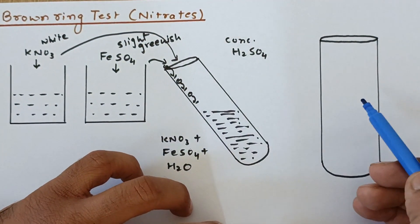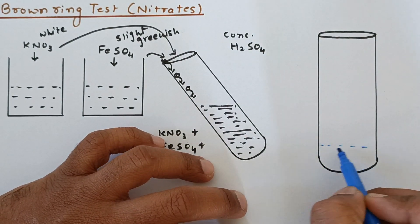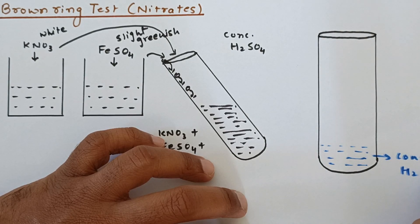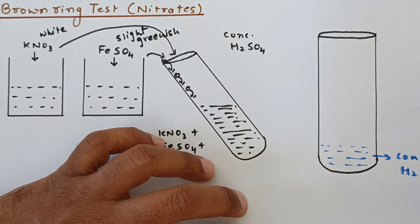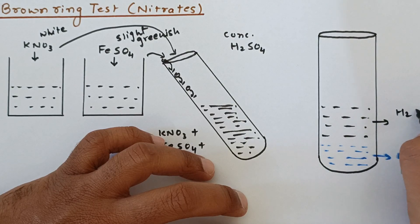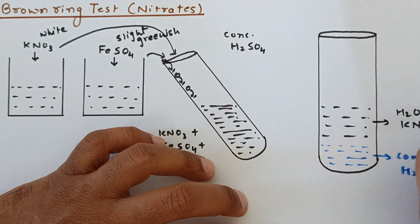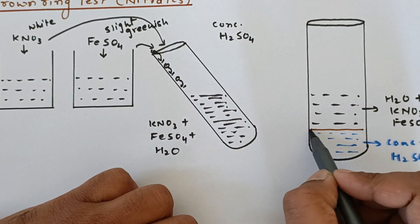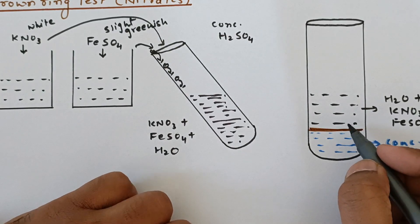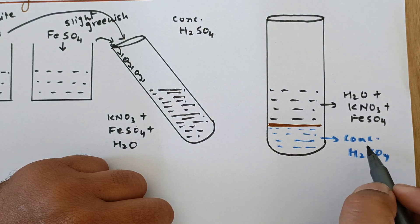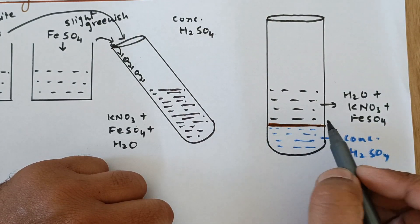So let me show you in a newer picture over here that this is the concentrated sulfuric acid, and above it we have water plus KNO3 plus FeSO4. Now where does this reaction take place? The reaction takes place at the interface here. Now this is the area where above which you have these three substances and below which you have concentrated sulfuric acid. So this is the interface where the reaction is going to happen.